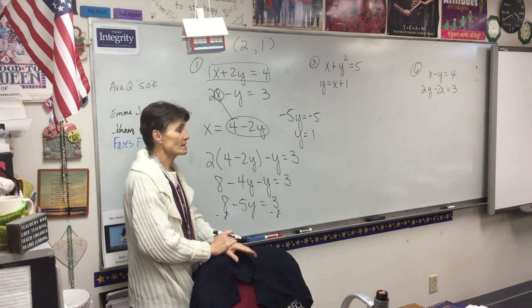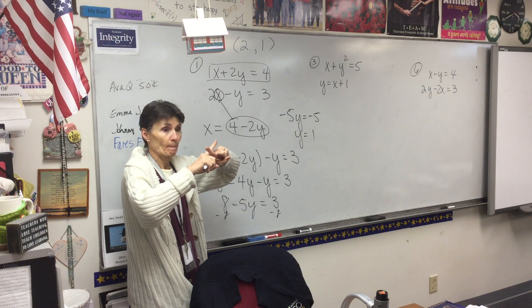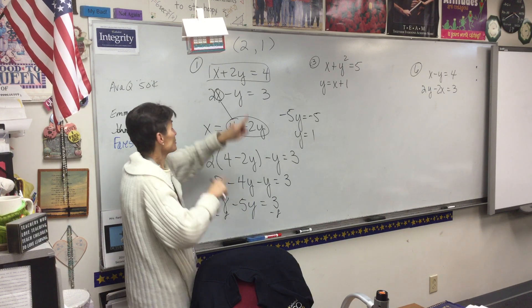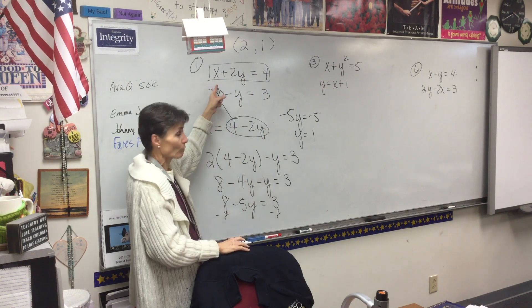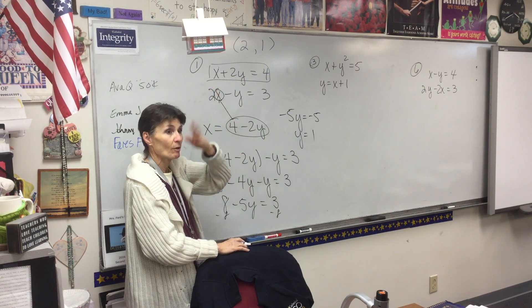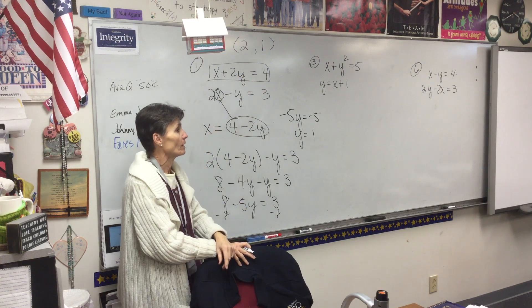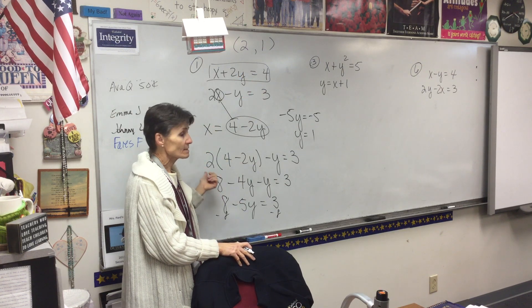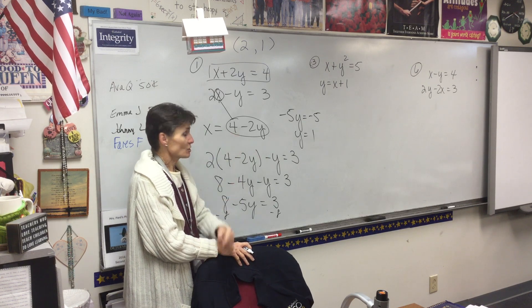So the answer to the problem is 2 comma 1. Remember, when you're solving a system of equations, you're looking for where they cross. These two lines cross at the point 2 comma 1. If you were to graph these two lines on a piece of graph paper, you would see them crossing at the point 2 comma 1. Is that ringing some bells? All right, now let's look at the next one.